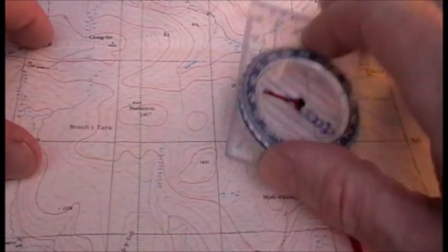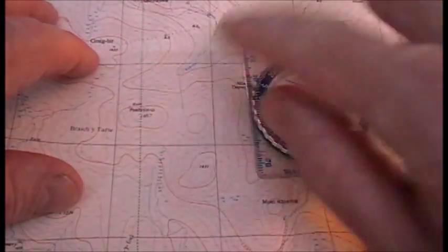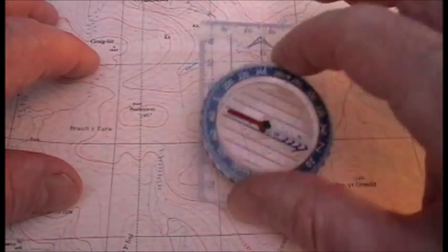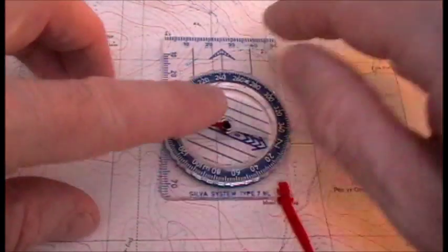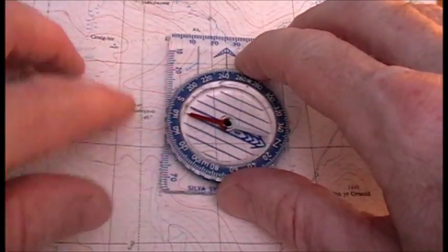Okay, in my first video I explained how you can estimate distances on a map using grid lines and also using a map measure. There is another method you could use, and that's using the centimeter rule on most compasses on the edge of the compass.